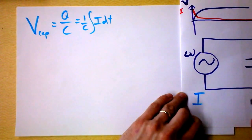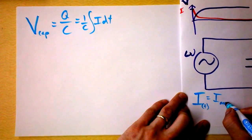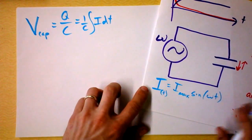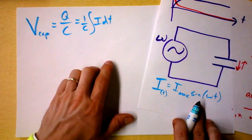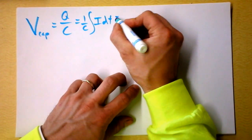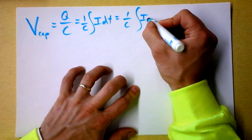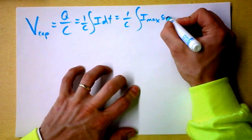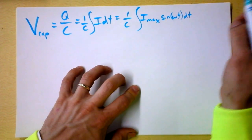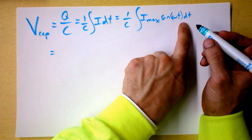I'm going to say the current as a function of time is I-max times the sine of omega times T. I plug that into the integral: it's 1 over C times the integral of I-max times sine of omega T over time. I-max is a constant and pulls out, and we just have to do the integral of sine of omega T, which gives us negative cosine, and then we apply the chain rule for integrals.